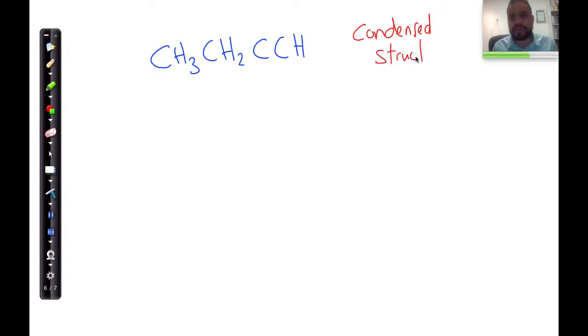Condensed structural. And just for practice, I want you to do this with me. We can name this very easily. One, two, three, four. Four carbons. We already know it's going to be some variation of butine or butine itself, with the triple bond going to be on the first carbon there because I can see that there's nothing else around it. So it's but-1-ine.